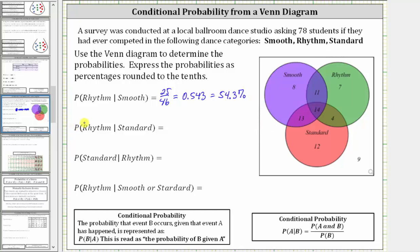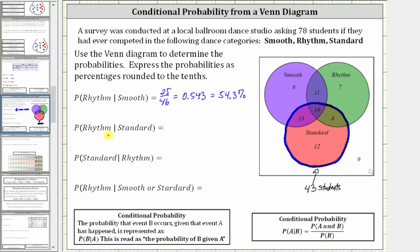Next, we're asked to find the probability a student competed in rhythm given they competed in standard. Because we are given they competed in standard, we're only concerned about the number of students in the standard set, which is this set here. The number of students that competed in standard is equal to 13 plus 14 plus 4 plus 12, which equals 43. We need to find the subset of this set that competed in rhythm, which is this subset here.